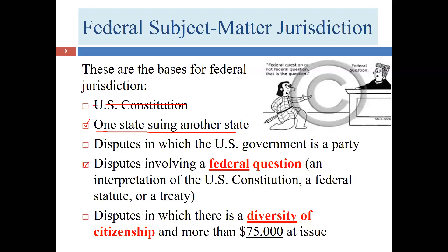A third basis is when the U.S. government is a party — whether as plaintiff or defendant, or even just one department of the government. If you're suing the U.S. government, the case must be in federal court. This makes sense because the federal government is supreme over the states — if it had to follow what a state court judge told it to do, the supremacy of the federal government would be undermined. The federal government only has to answer to federal court judges, not state court judges.